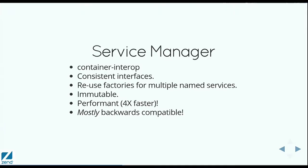The first argument is always the container, so you know that the container is the first argument and then any additional arguments come after that. You can now reuse factories for multiple named services. It means that you don't necessarily need to use an abstract factory anymore. You can point a service name at a factory, and it will get that name, and it can actually branch and create a different instance based on that.